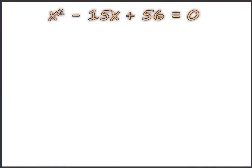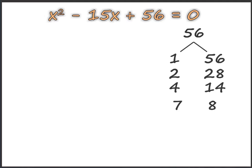Let's look at another example: x squared minus 15x plus 56. The middle term here is minus 15x. Let's split the factors of 56: 1 and 56, 2 and 28, 4 and 14, 7 and 8.